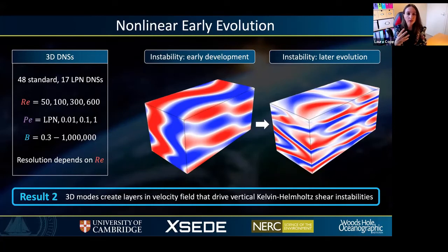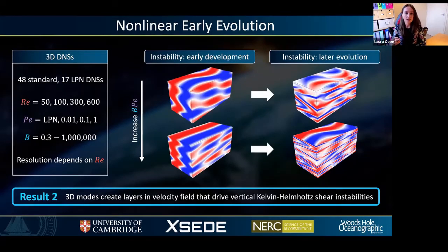These modes cause a vertical modulation of the position of these meanders. They grow in amplitude and ultimately this growth creates layers in the velocity field that give rise to strong vertical shear between the layers. This shear allows for the development of vertical shear instabilities and hence the onset of turbulence. This is the second key point in this talk today. It's also useful to mention that as BPe increases, the vertical scale of these 3D modes decreases.